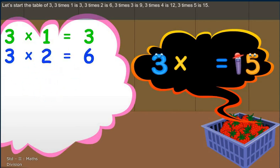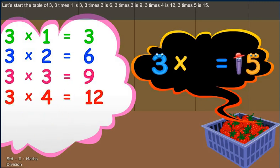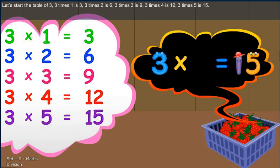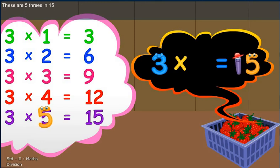Let's start the table of 3. 3 times 1 is 3. 3 times 2 is 6. 3 times 3 is 9. 3 times 4 is 12. 3 times 5 is 15. There are 5 3's in 15.